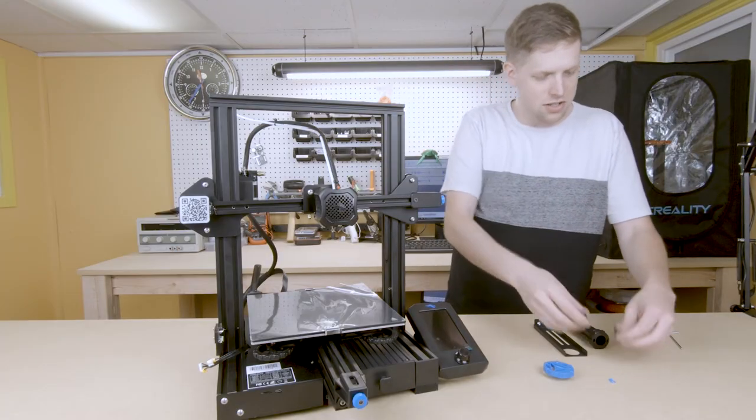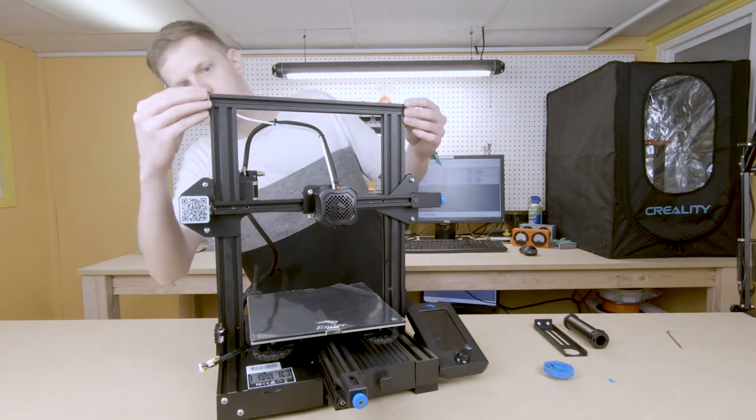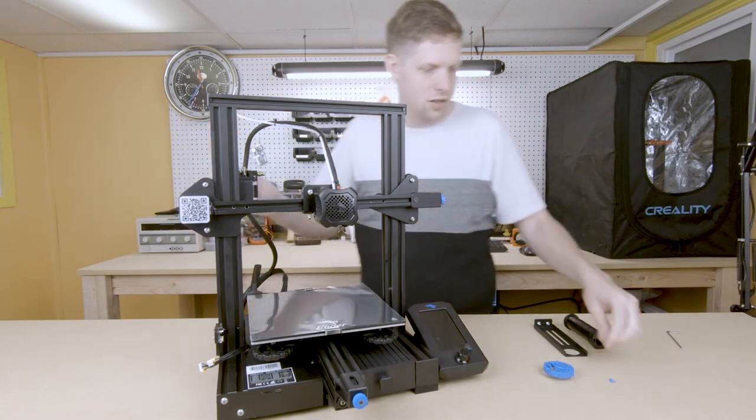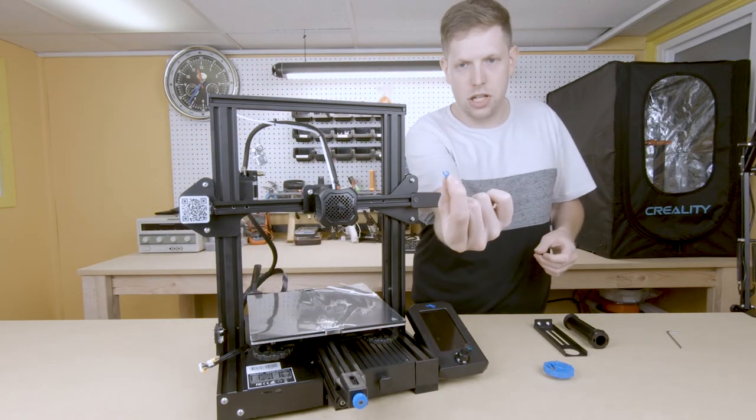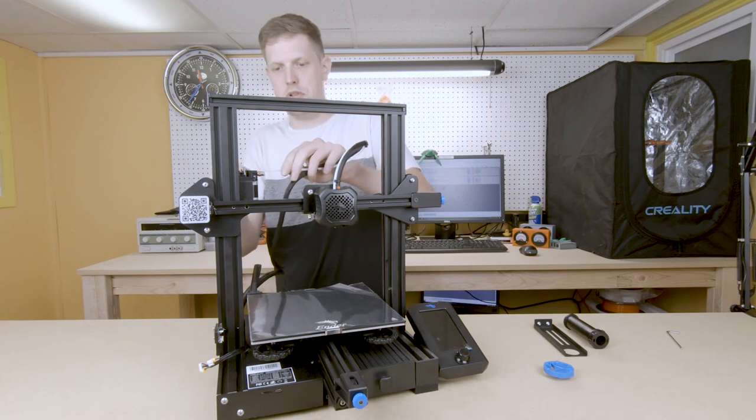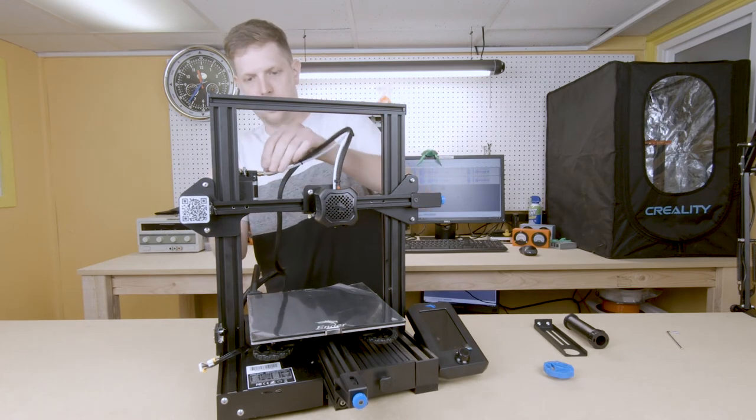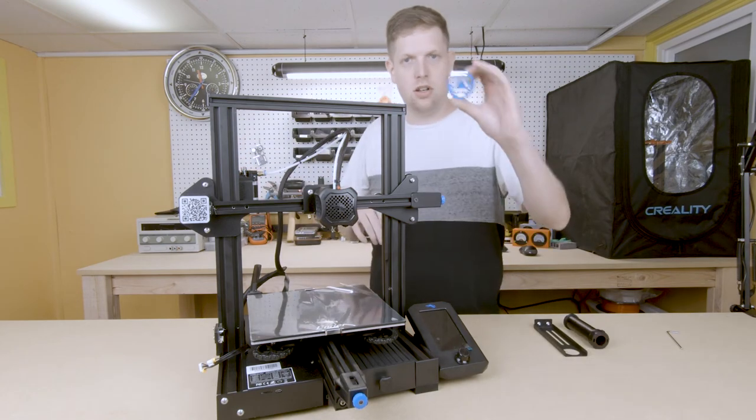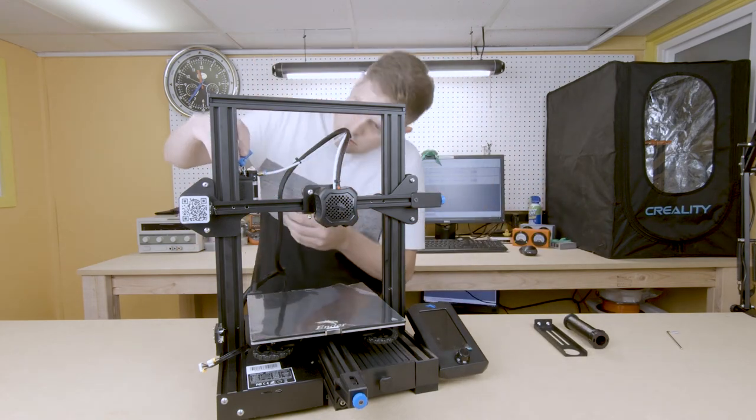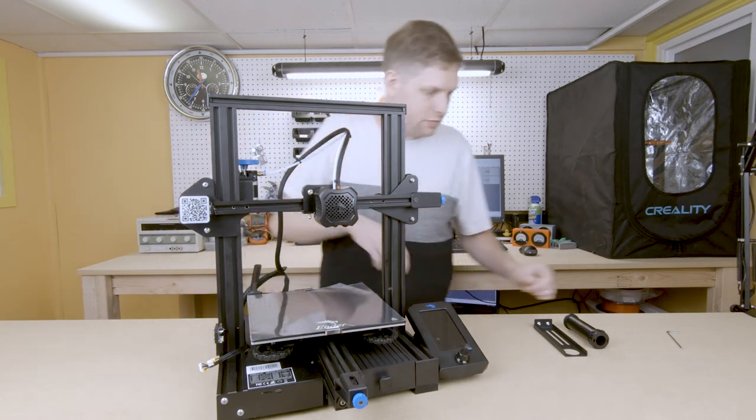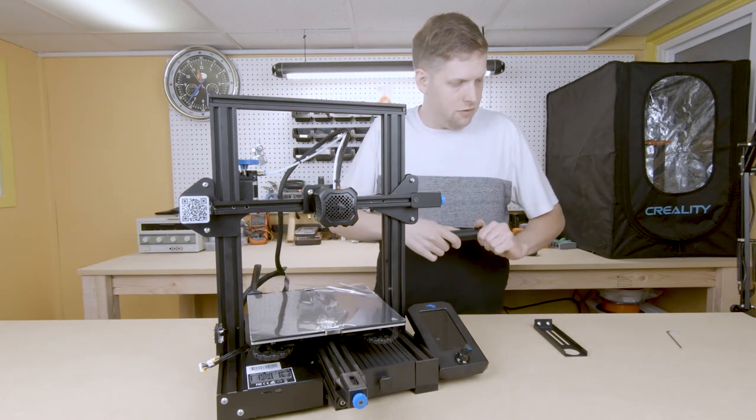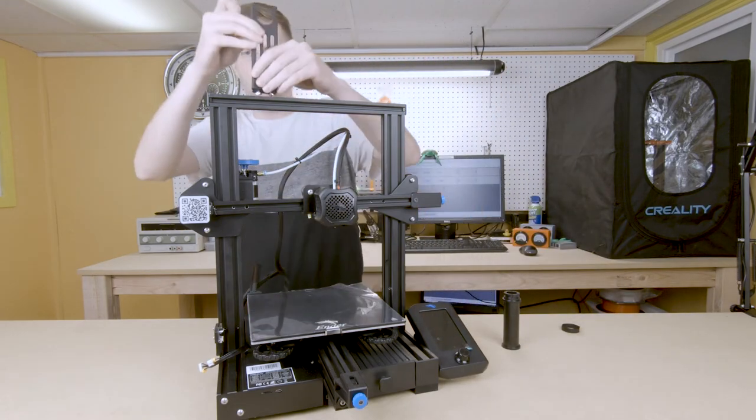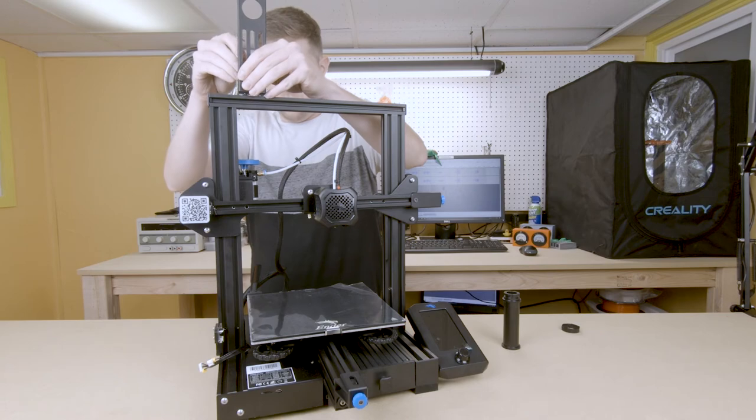We're down to the last parts. We're going to put our end caps onto the extrusions. We have our clip for the bowden tube, so we'll just push this into the fitting. This clip just makes sure it stays in place. The wheel for the extruder motor. And then finally, we can put our spool holder on.